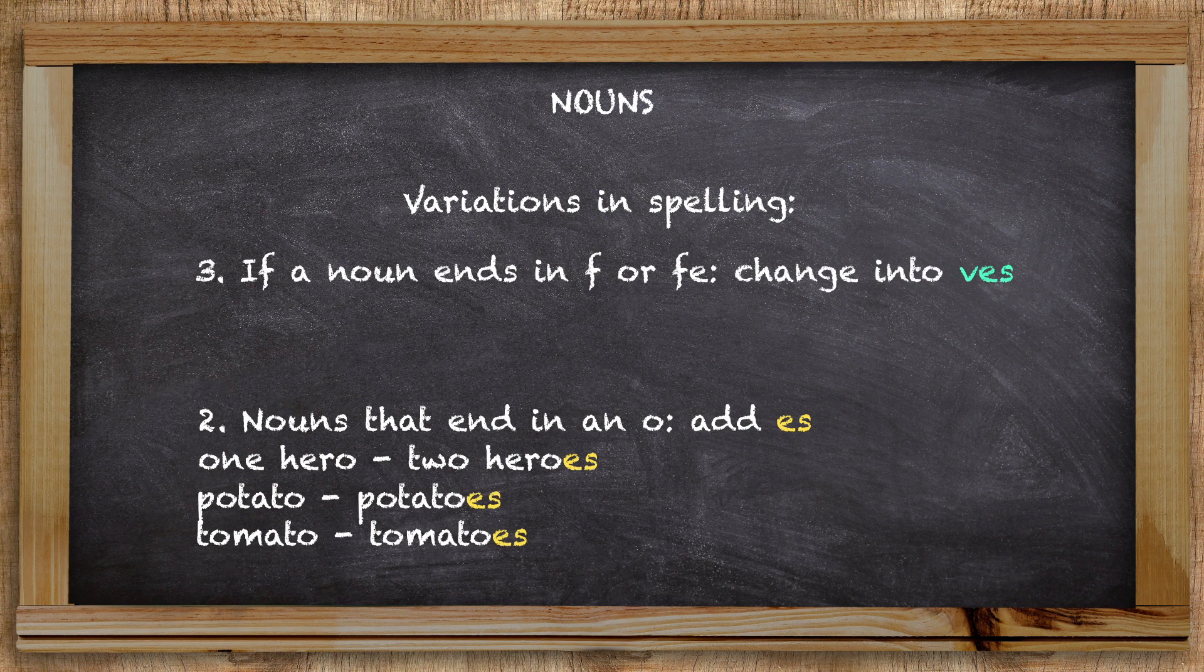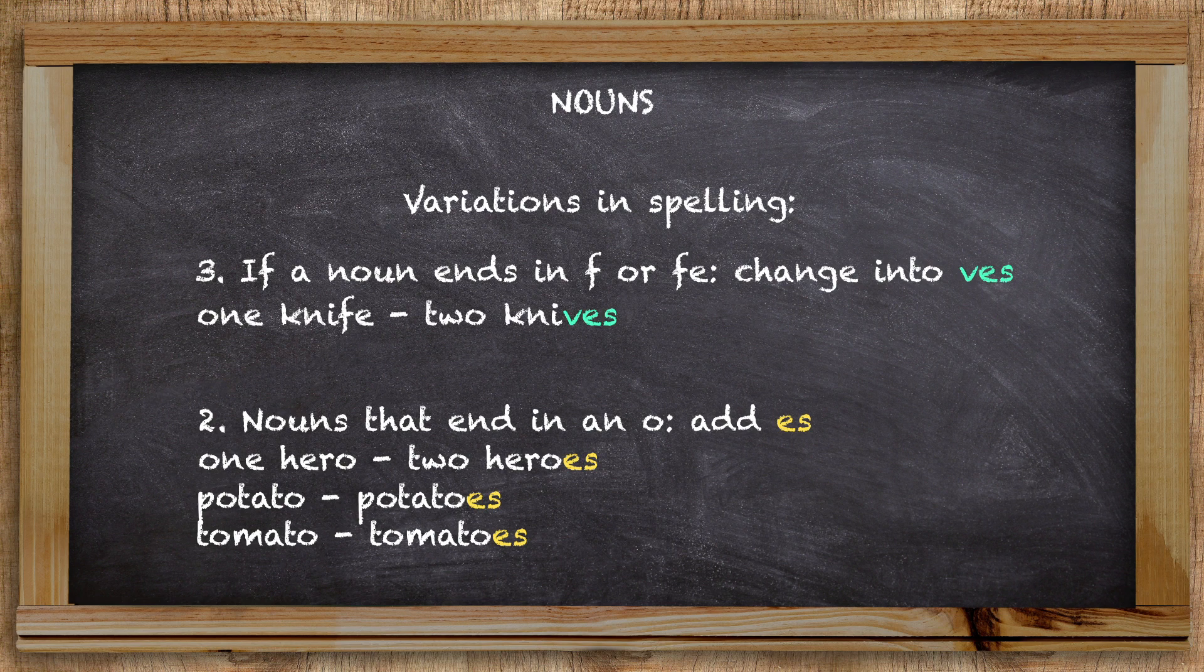If a noun ends in an f or fe, it changes into ves. Take the word knife, for example. You would have one knife but two knives. The same goes for wife. You would have one wife but two wives with ves.